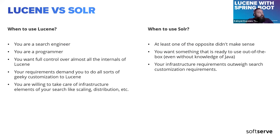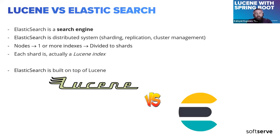Comparing Lucene with Elasticsearch, which is another commonly used technology today: the relationship is almost the same — Elasticsearch is built on top of Lucene. As you know, Elasticsearch is a distributed system containing nodes, and each node is built from one or more indexes divided into shards. Those shards are actually Lucene indexes.